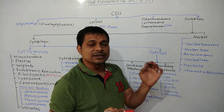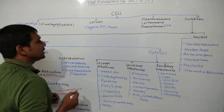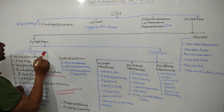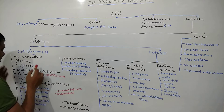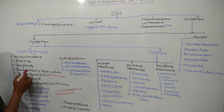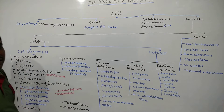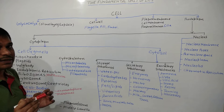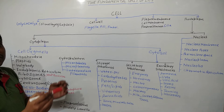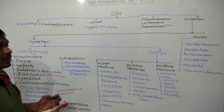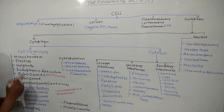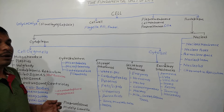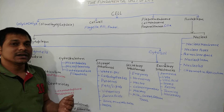Nucleus is always present in eukaryotic cells. Cytoplasm is divided into cell organelles and cytosol. Different types of cell organelles include mitochondria, known as the powerhouse or power plant of the cell, because it provides energy for vital activities and life processes.